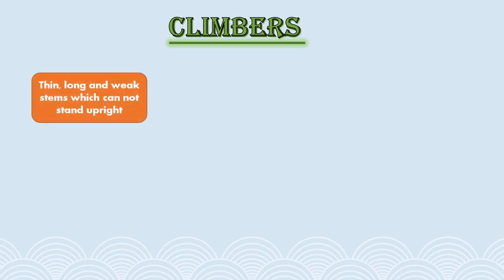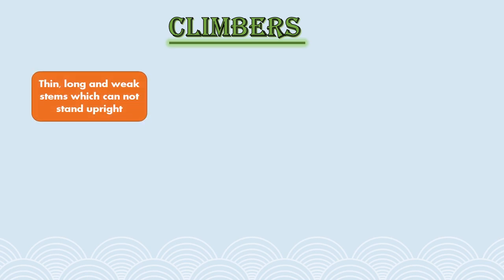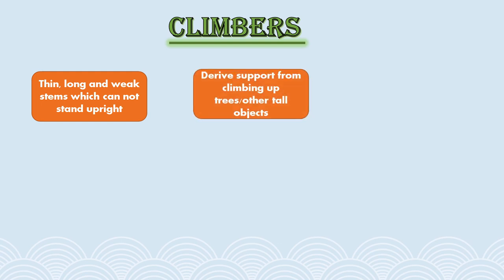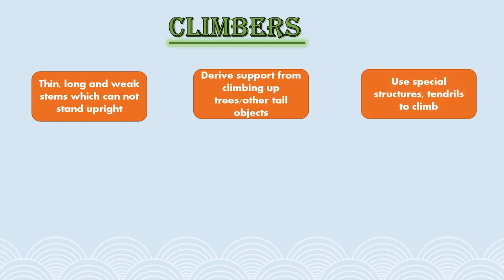The fourth type are climbers. Climbers have a very thin, long and weak stem which cannot stand upright, but they can use external support to grow vertically and carry their weight, so they climb — that is why they are named climbers. These plants use special structures called tendrils to climb. Sometimes they also produce a twine or hook from their leaves to climb.